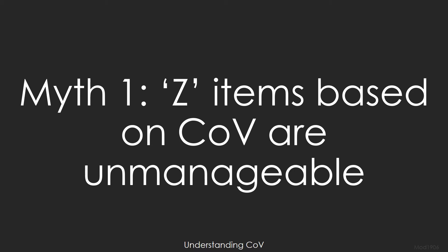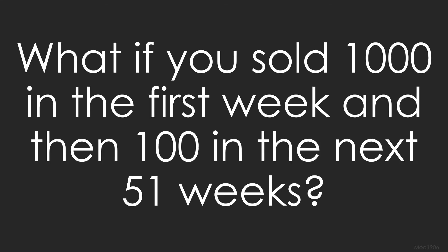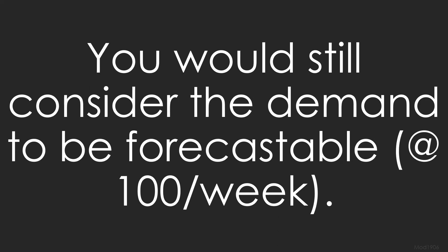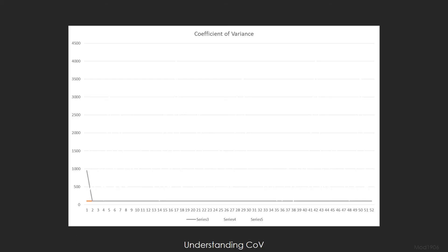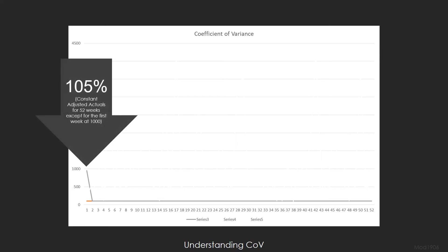Myth number 1: Z items based on COV are unmanageable. What if you sold 1,000 in the first week and then 100 in the next 51 weeks? You would still consider the demand to be forecastable at 100 per week, since the last 51 weeks you sold 100. But for COV calculations, the value would actually be quite high — in this case 105%.